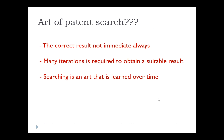For example, when you file a patent, there is a journal published by the Indian Patent Office — called 'publication of patent.' Stage one is filing and stage two is publication. Publication generally takes 18 months.